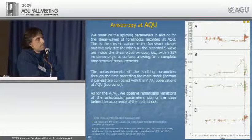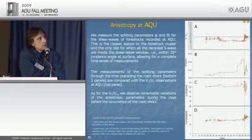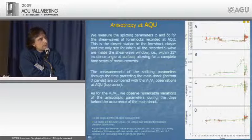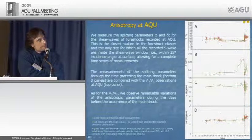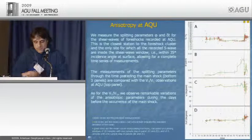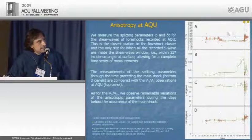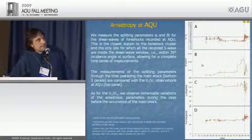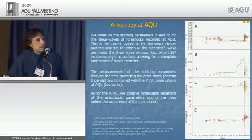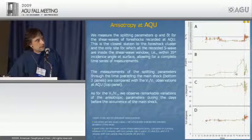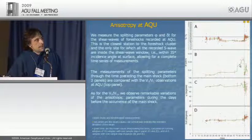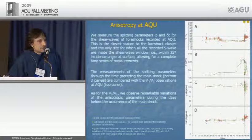The azimuth of the fast split wave is oriented in a northwest-southeast direction, quite stable — parallel to the strike of the activated fault system and to the maximum horizontal stress in the area. Then, on March 13, this value becomes unstable and starts to fluctuate. Shear waves showing no splitting are linearly polarized at 90 degrees from the prevalent fast split wave azimuth. On March 13, this linear polarization undergoes a sharp change.